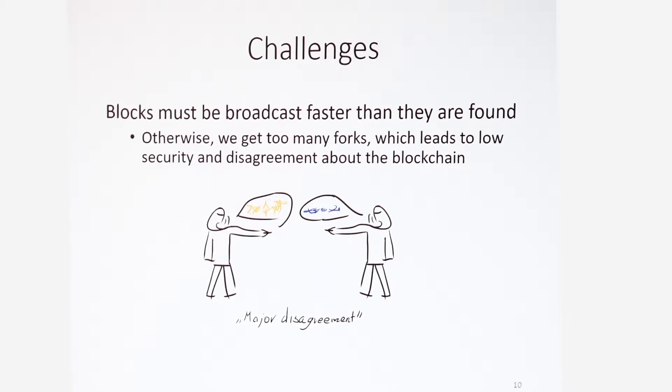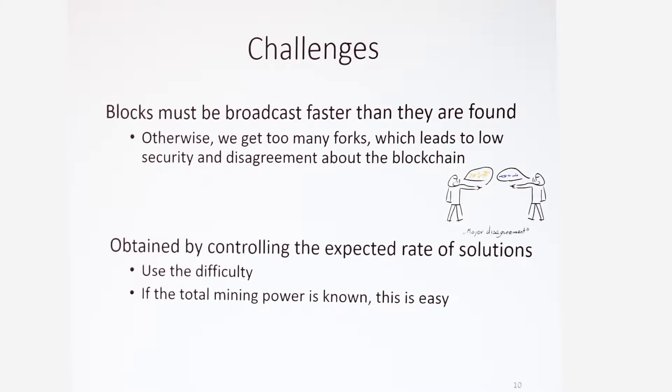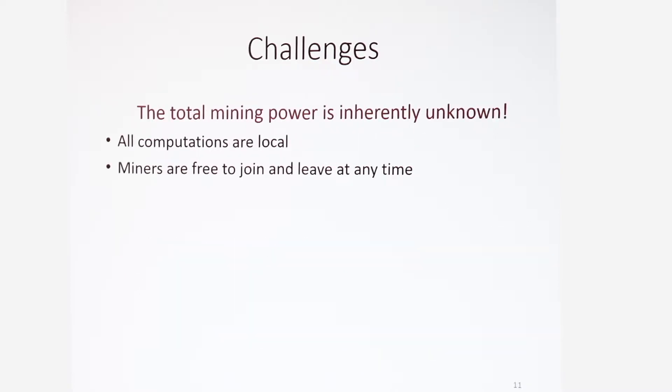But we cannot control the broadcasting times. That is due to the internet. It is out of our reach. The coin, however, decides the difficulty. So we control the block generation rate through the difficulty. The higher the difficulty, the lower the block generation rate is. And if we know the total mining power, it's very easy. The block generation rate in expectation is exactly the total mining power divided by the difficulty. Unfortunately, the total mining power is unknown because we wish to keep the system open and anonymous. So what's the thing to do? Let's estimate it based on what we observe. The coin knows the difficulty because it sets it. It can observe the current rate and therefore it can try to decide the rate for the future.